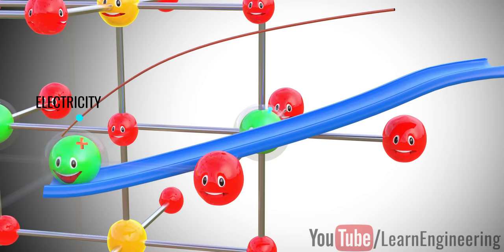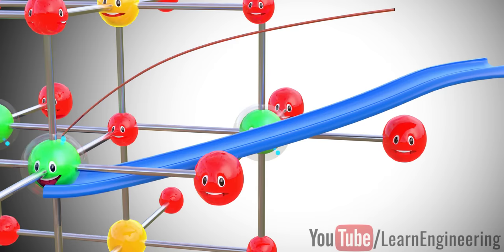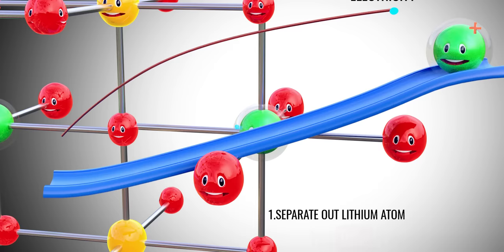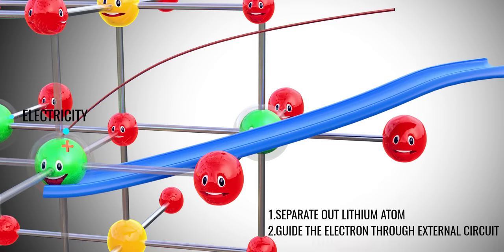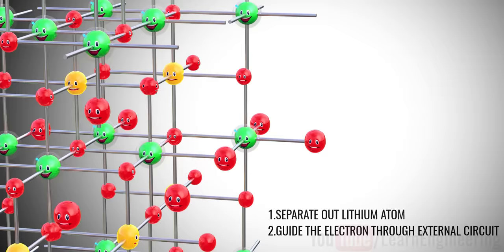From these discussions, it is clear that we can produce electricity from this lithium metal oxide if we firstly separate out lithium atoms from the lithium metal oxide, and secondly guide the electrons lost from such lithium atoms through an external circuit. Let's see how lithium-ion cells achieve these two objectives.